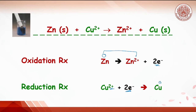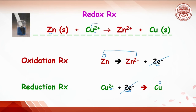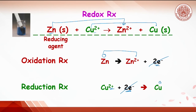When these two reactions are combined, electrons are crossed out and the redox reaction is obtained. Looking closely at the redox reaction: zinc strip reduces the oxidation number of copper, so zinc is called the reducing agent. On the other hand, copper increases zinc's oxidation number, so copper ion is called the oxidizing agent.